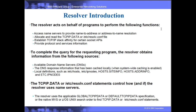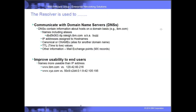The Resolver will use local files when specified. The TCPIP.data file controls pretty much everything the Resolver does. The Resolver can be configured to allow every application to use the same default TCPIP.data file, or you can use a native search order where, depending on the API, the Resolver will search for specific TCPIP.data files. The Resolver communicates with domain name servers, or DNS for short.